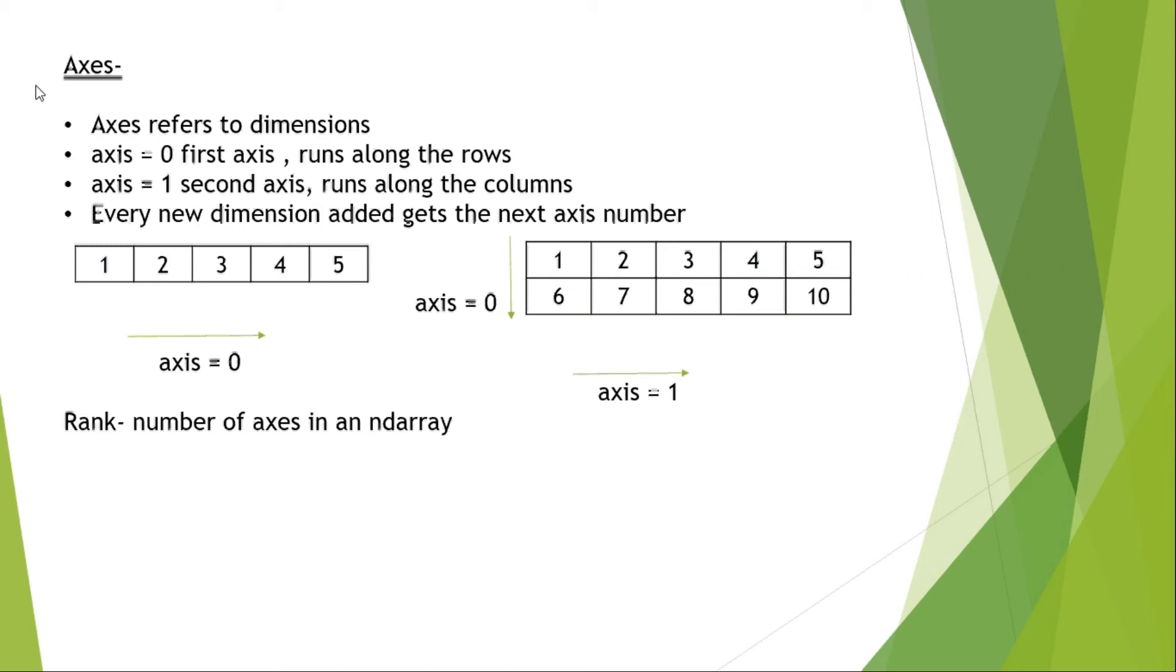Rank is the number of axes in an array. If we watch carefully, you have two arrays in front of you. The first one has only one axis, so the first array has only rank 1. The second one has two axes, so the rank of the second array is 2. Shape is the number of elements about each axis. For the first array, in axis 0, there are 5 elements, so the shape is 5. In the second one, axis 0 has 2 elements and axis 1 has 5 elements.